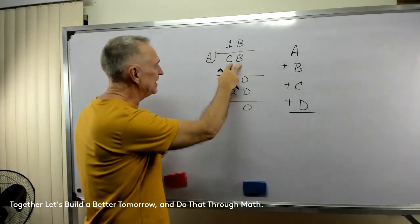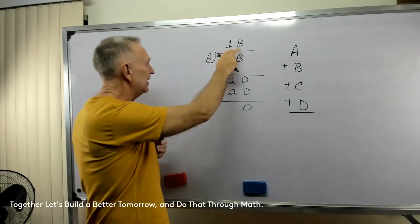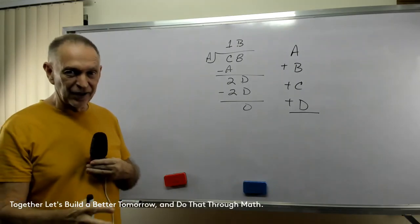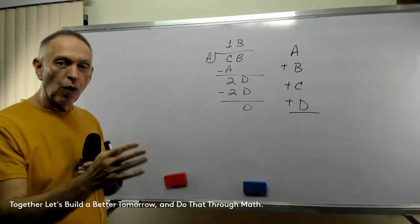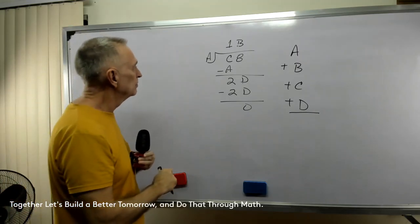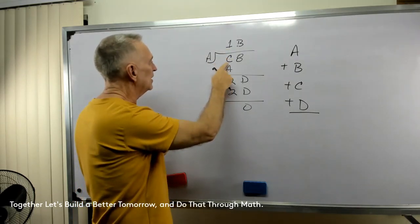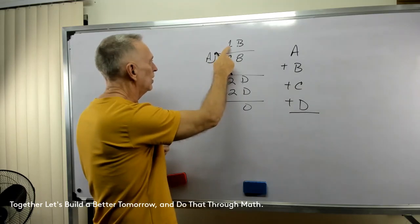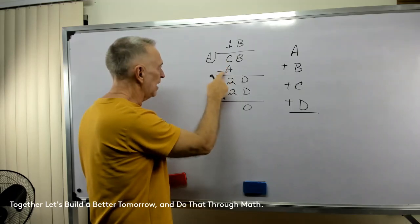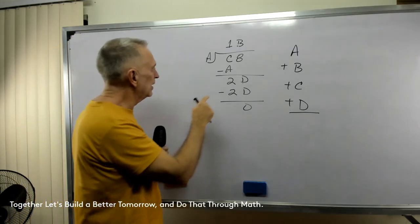We have C8 divided by A — it equals 1B. Now, don't let your hair catch on fire. Let's just walk through the process of dividing and see what happens. We see that C divided by A is 1. 1 times A is A. C minus A equals 2. That's our first thing we need to remember.